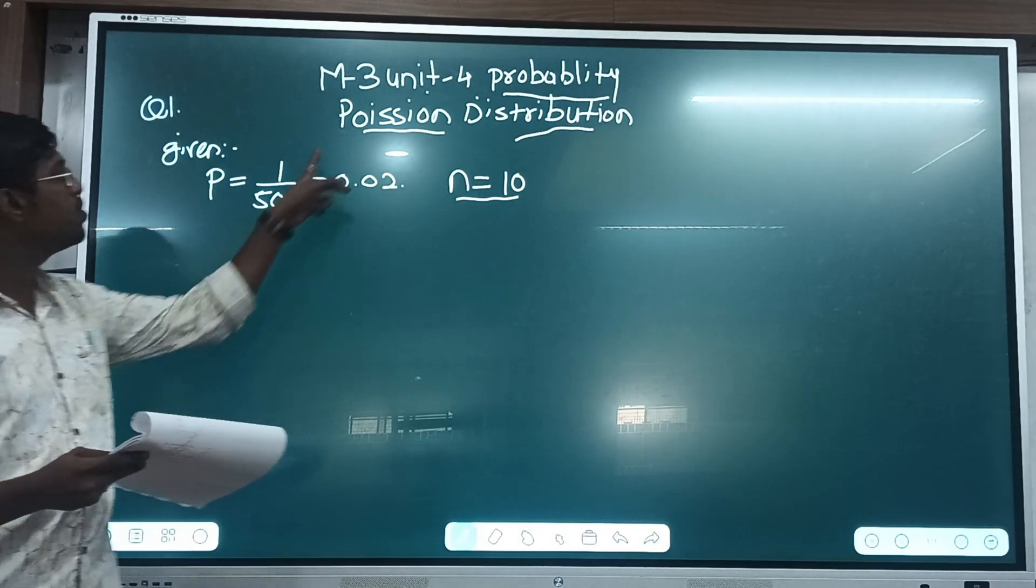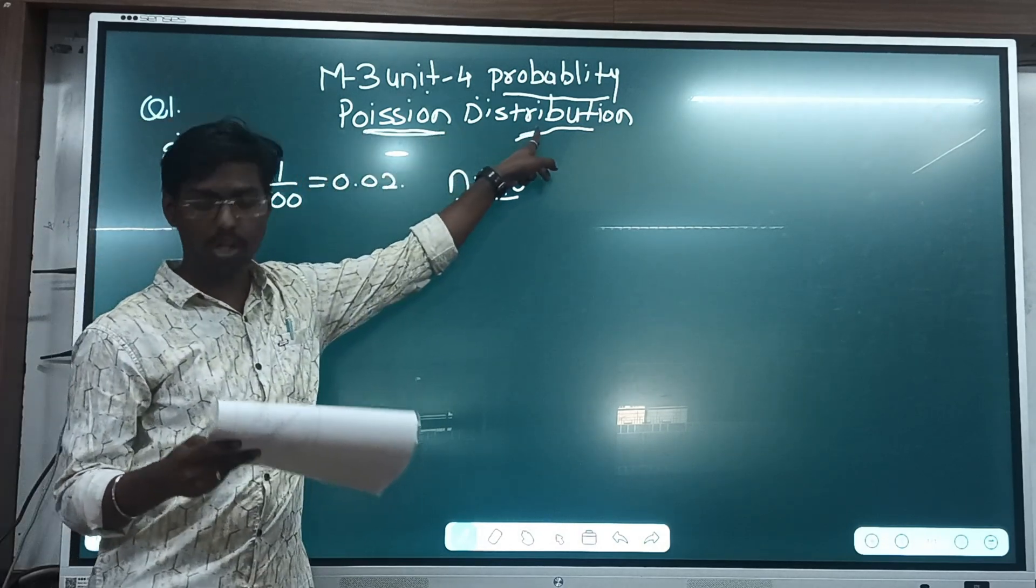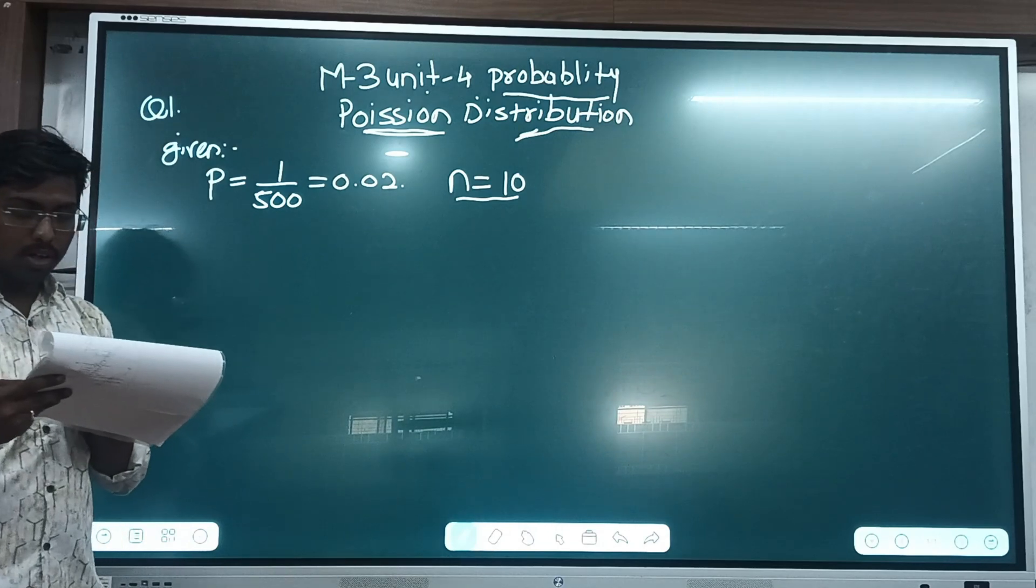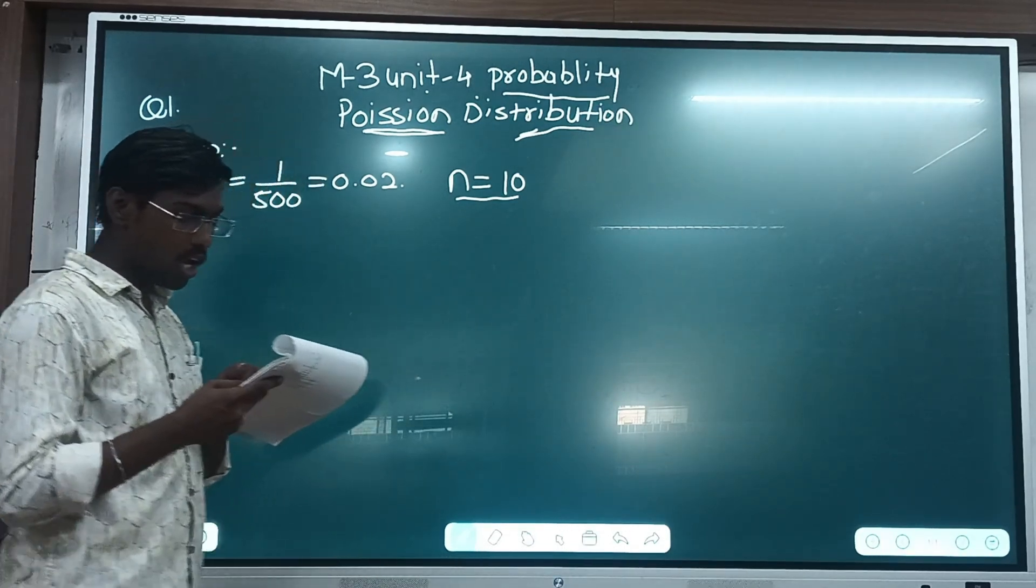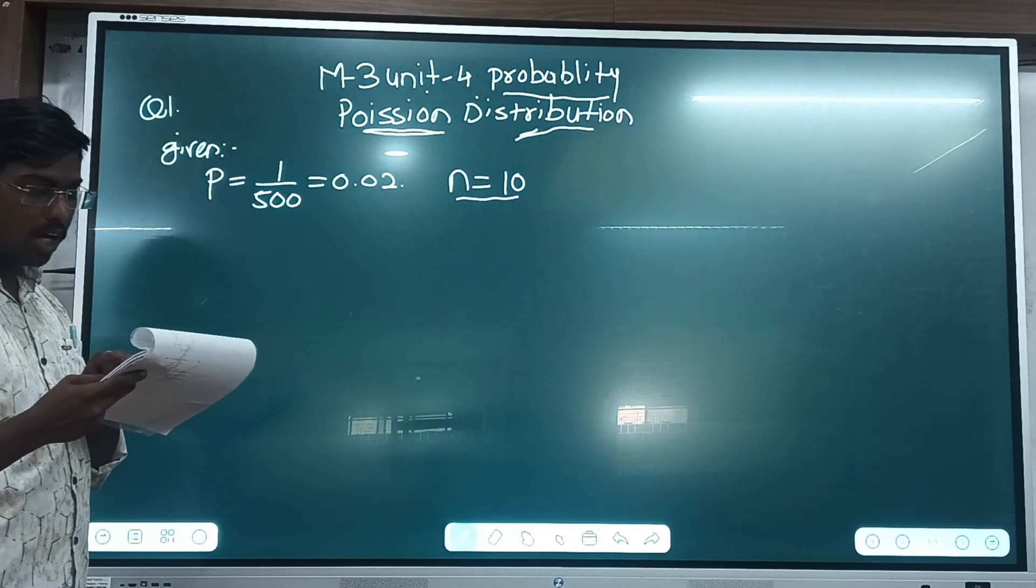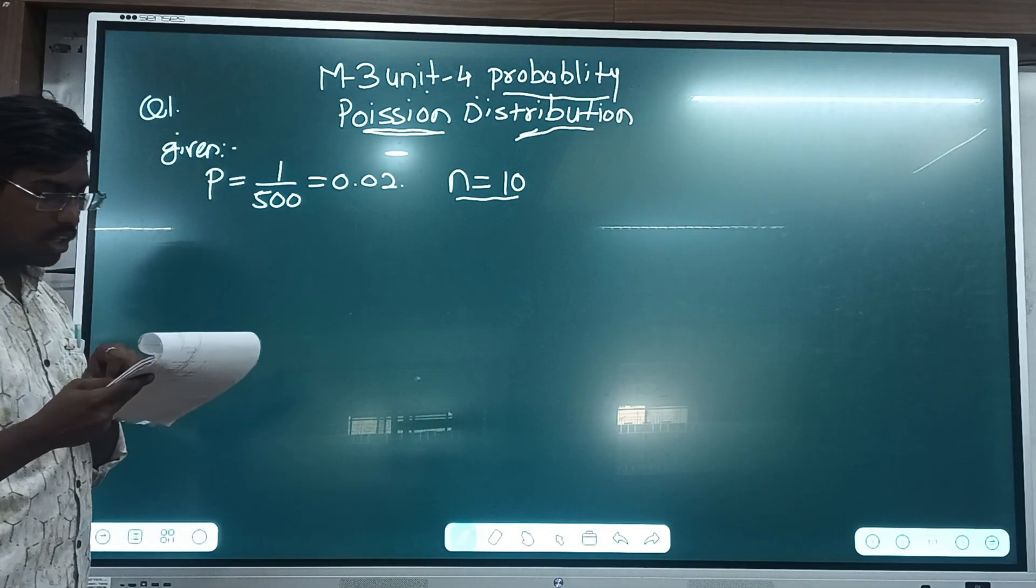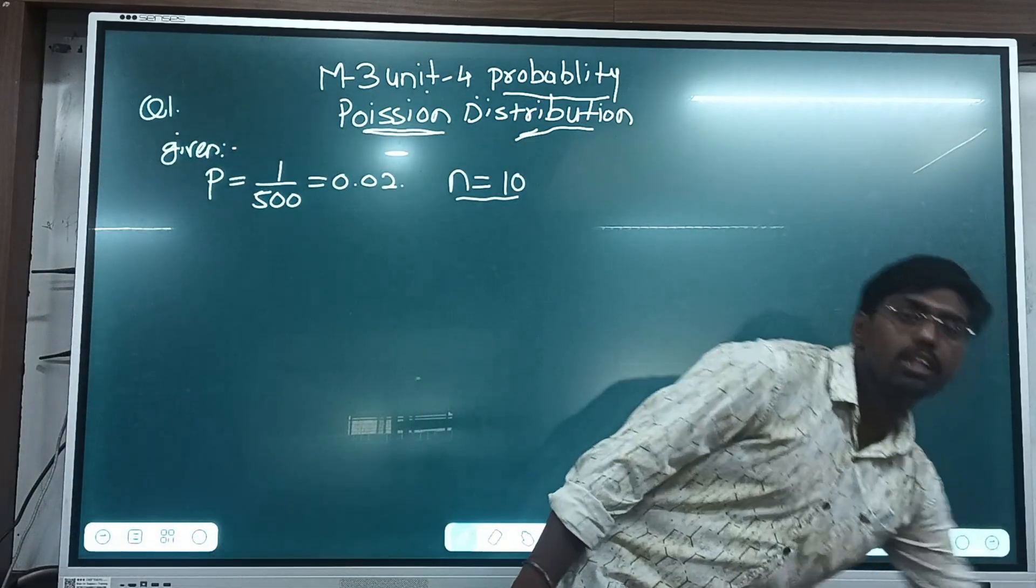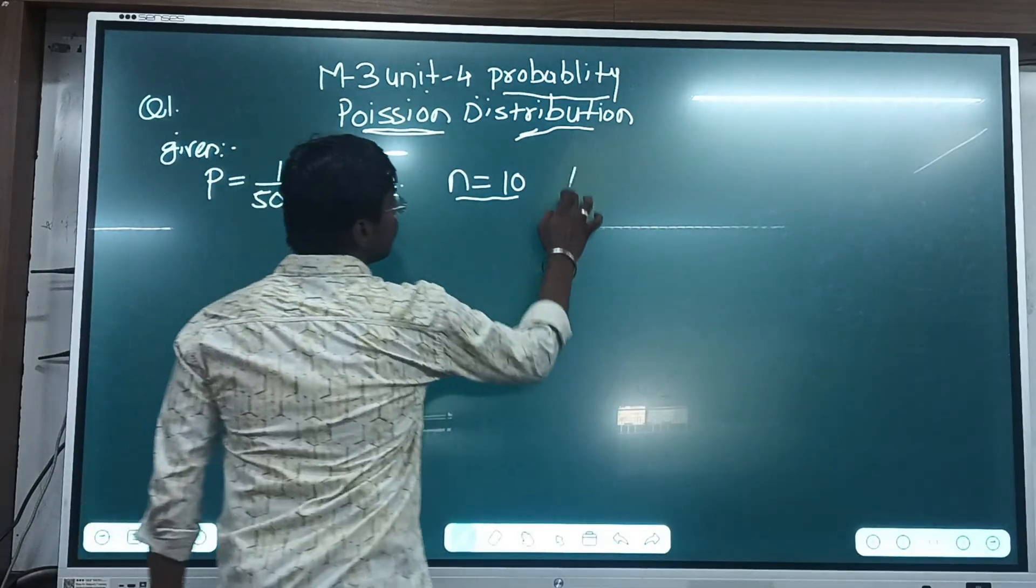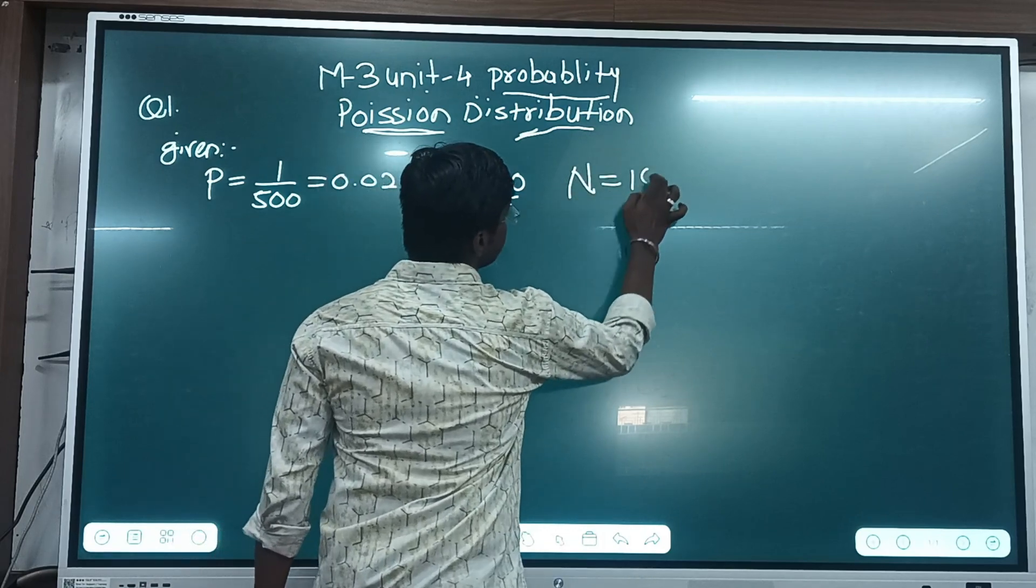Then use Poisson's distribution, use this Poisson's distribution method to calculate approximate number of packages containing no defective and two defective blades in the given packages out of 10,000. So capital N is given, that is 10,000.